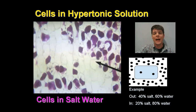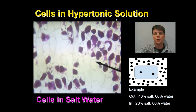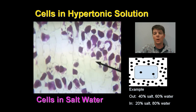Let's take a look at the onion cells that are in the saltwater environment. When the onion cells are in that saltwater solution, we say that they are in a hypertonic solution. Hyper means higher or above. For our example diagram, we're saying that on the outside of the cell we have 40% salt and 60% water. On the inside of the cell, we only have 20% salt and 80% water. So again, we would say that these cells are in a hypertonic solution.